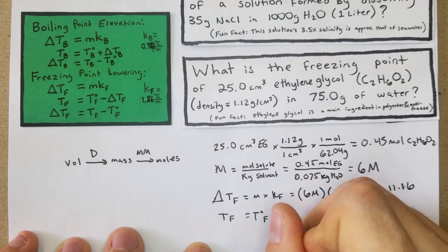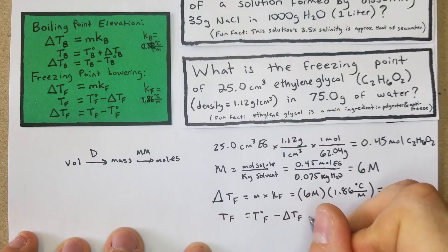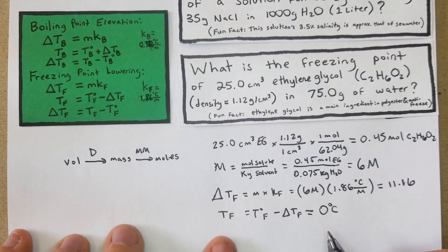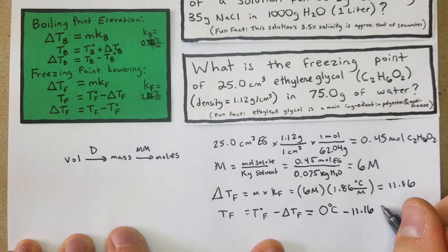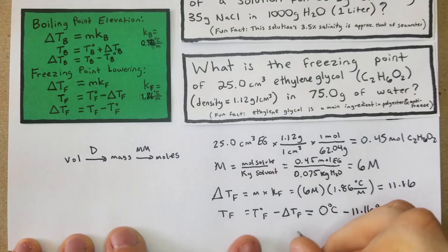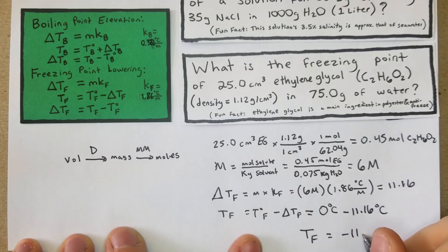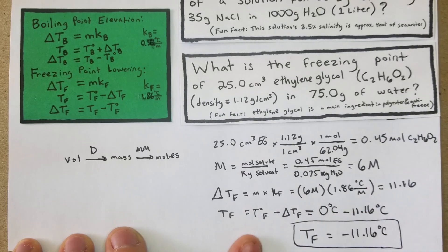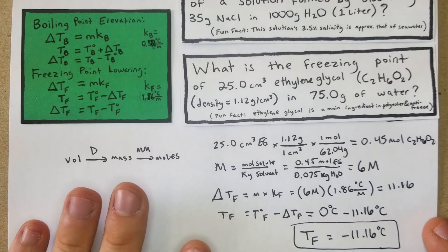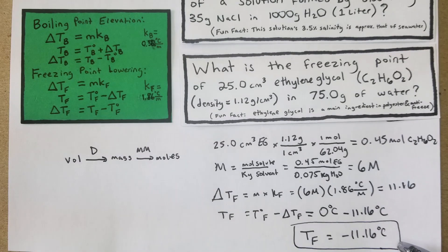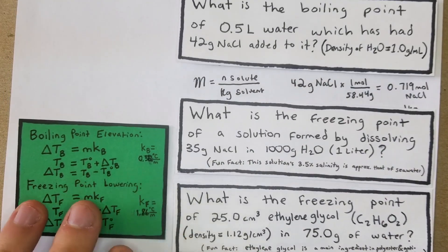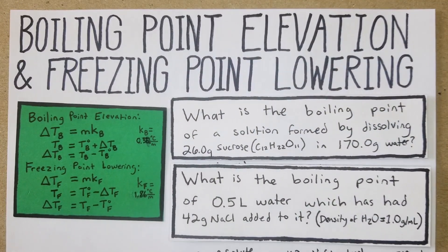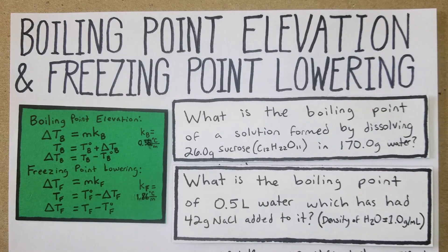The freezing point equals Tf minus ΔTf. It won't always be 0°C — if you're working with other solutions the base freezing point may differ — but here: 0°C minus 11.16°C equals negative 11.16°C. As you can see, antifreeze or ethylene glycol lowers the freezing point much more than salt does. It would also increase the boiling point even more. That is boiling point elevation and freezing point lowering — hopefully this helps.